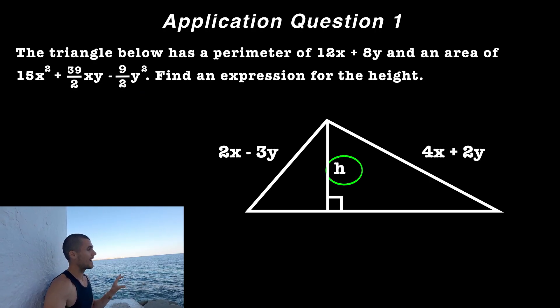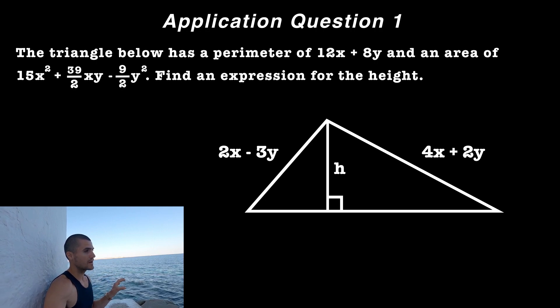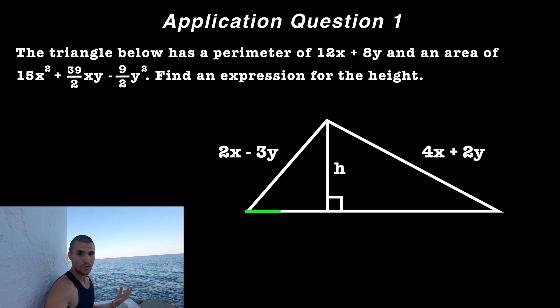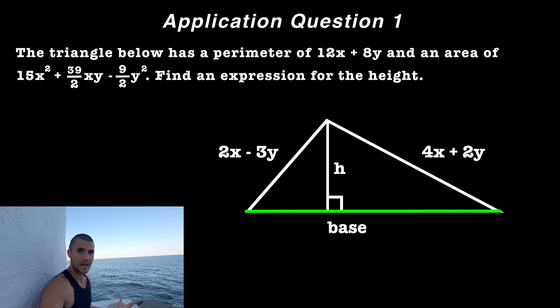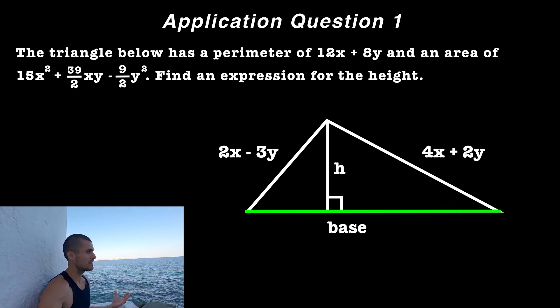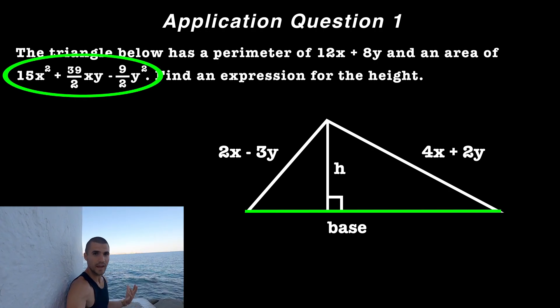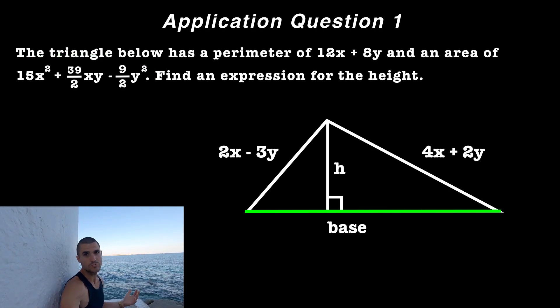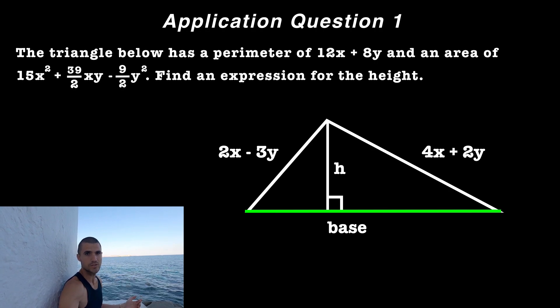And if we're treating that actually as the height, then the third side that we don't have an expression for, we could treat that as the base. And we're going to eventually need the base because we're going to be using that area expression. And we know that the area of a triangle is equal to base times height divided by two.